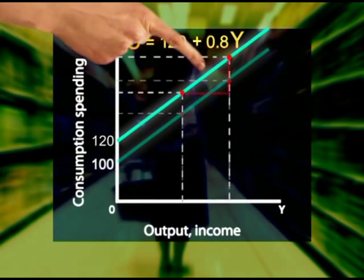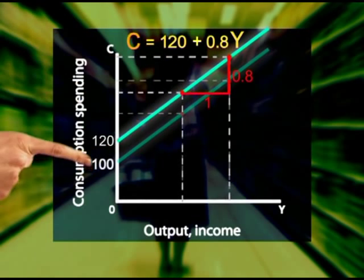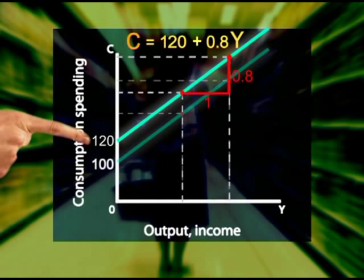Note that the slope hasn't changed — our marginal propensity to consume is still the same as before. An increase in autonomous consumption spending therefore shifts the consumption curve upwards.